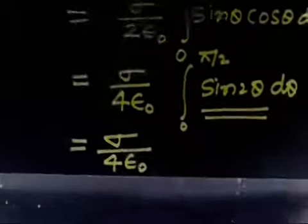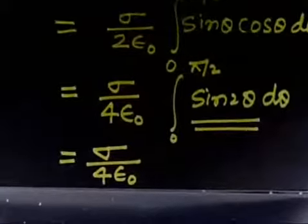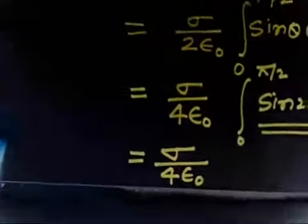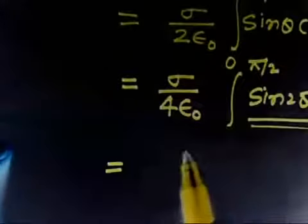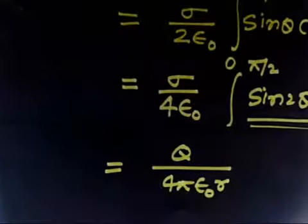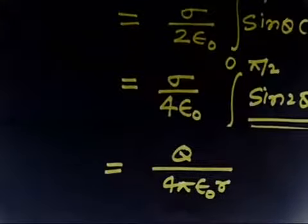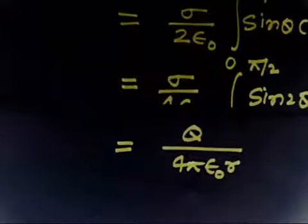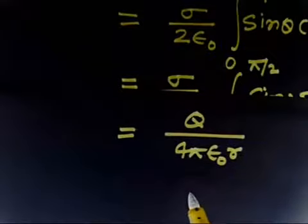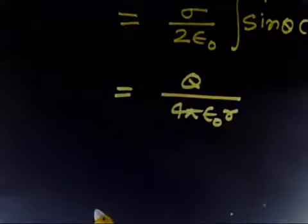The same question also asks us to calculate the electric potential at the center of the hemisphere. For the potential calculation we will proceed the same way. The potential due to a point charge or a ring is given by Q over 4 pi epsilon-naught R.